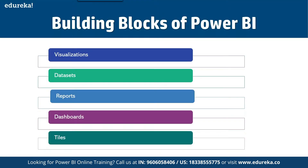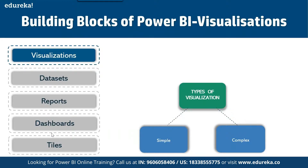Now let's talk about the building blocks of Power BI. First is visualization — the visual representation of your data, sometimes called visuals. Next is a dataset, which is a collection of data that Power BI uses to create visualizations. Third is a report, which is a collection of visuals from a dataset spanning one or more pages. Next is a dashboard, which is a single-page collection of visuals built from reports. And last is a tile, which is a single visualization found in a report or dashboard.